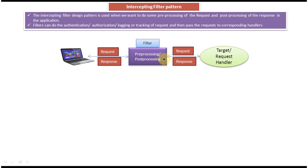For example, if an admin user logs into the system, they should have access to all functionalities. If a normal user enters the system, they can perform certain functions but not others. That kind of logic we can write in the filter. We can also track the request — such as which client or which IP address the request is coming from.